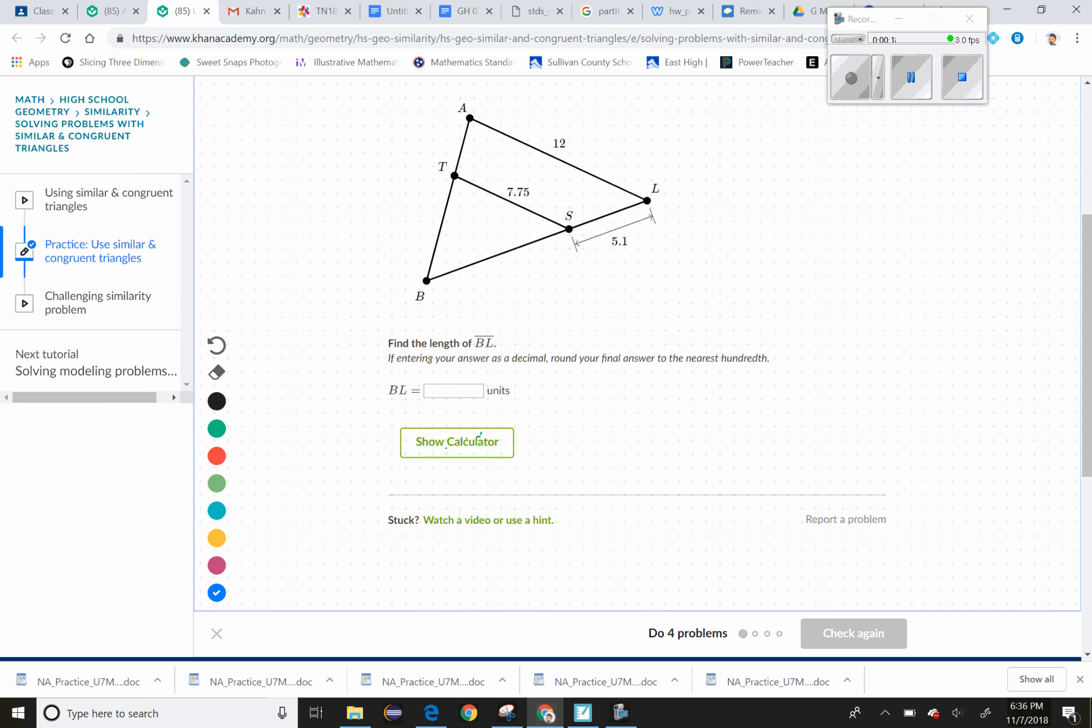We've got this smaller triangle—see if I can redraw it—where this is 7.75, and then this part we don't know from B to S. In the bigger triangle, we know this part is 12 and this whole side is going to be X plus 5.1.